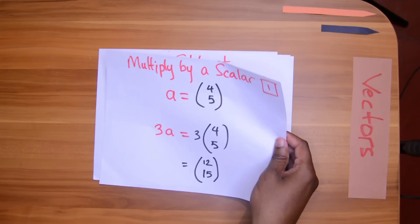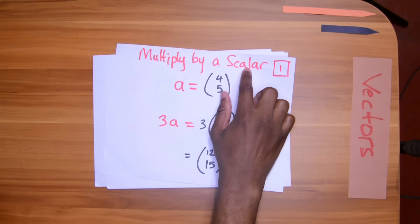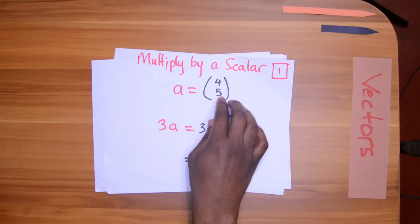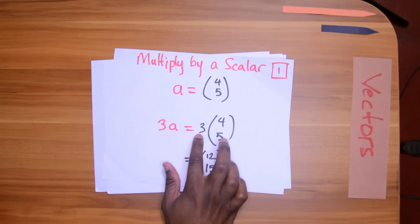We can multiply them by a scalar. The scalar here is just this number. It represents a number. So when you see scalar, you can think number. A is set at (4, 5). So 3A will be 3 times the X value, 3 times the Y value, 12 and 15 respectively.